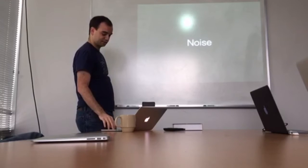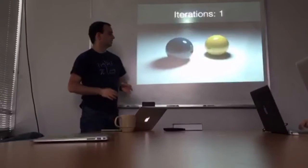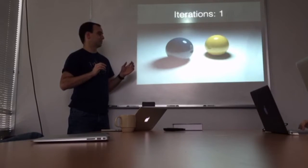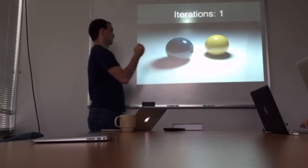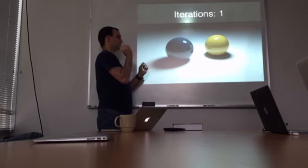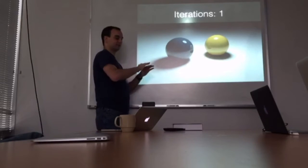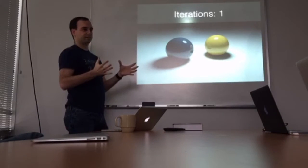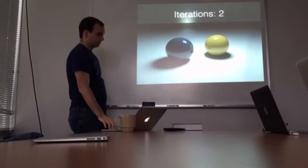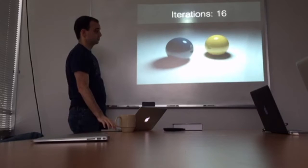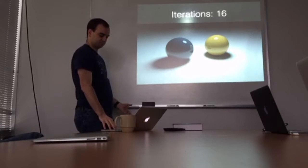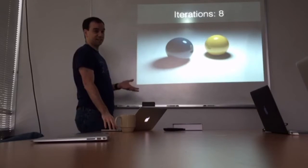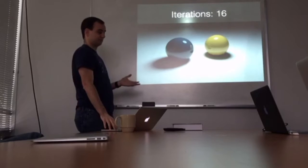Another big thing about path tracing is noise. It's an iterative process — you can let it render as long as you want. After just one iteration there's a lot of noise because we haven't sampled enough light rays to determine the color accurately. As you keep going, you reduce the noise. Disney targets about 30 minutes per frame for animation — that's about what they need to get a reasonable level of noise. Sometimes a little noise is nice because it makes it look like a real photograph, but you don't want too much.